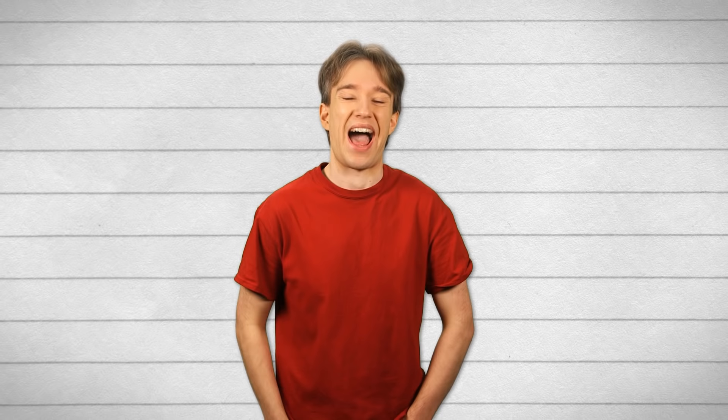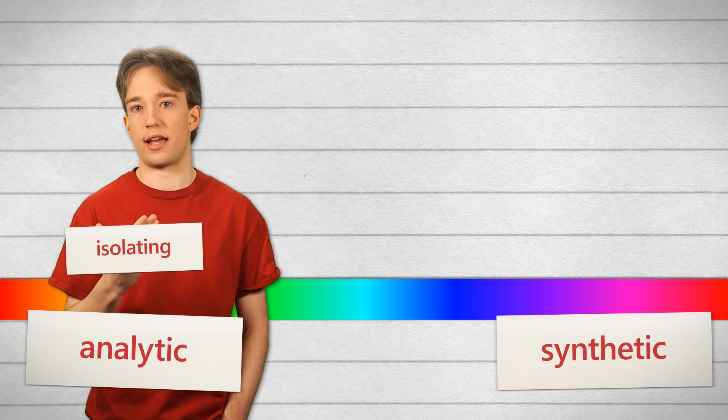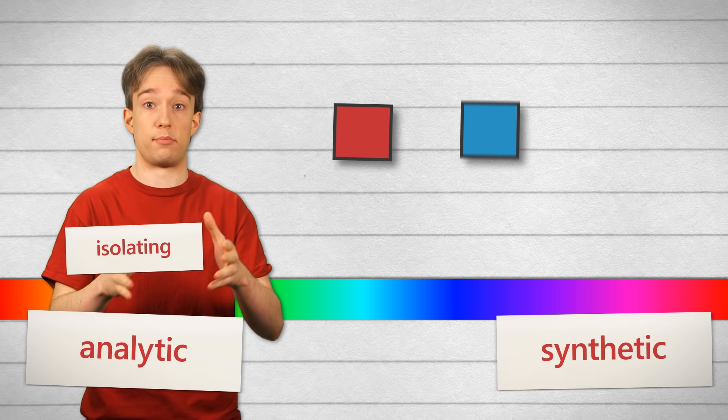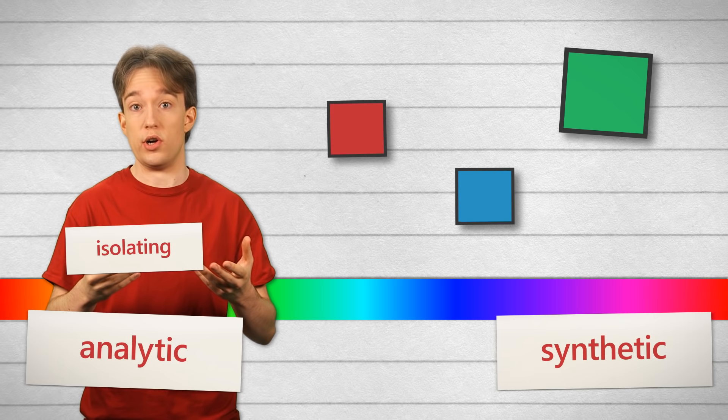Different languages have very different approaches on how to deal with morphemes, and those approaches are the reason why some languages have many short words, and others have long structures that are frequently difficult for adults learning a new language to deal with. There is a spectrum, and it stretches from analytic to synthetic. Over on the analytical side, there are the isolating languages, like Chinese and Vietnamese. Here, each morpheme is usually an entirely separate word. Assembling a sentence in one of these languages means you're mostly picking and choosing words and putting them next to each other.